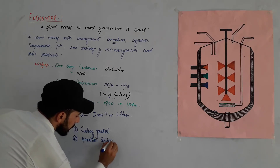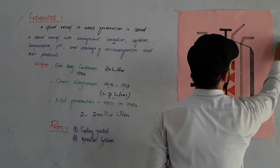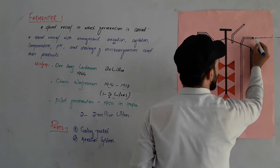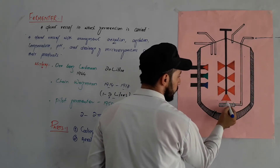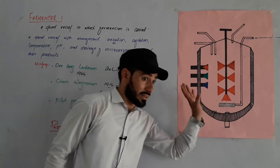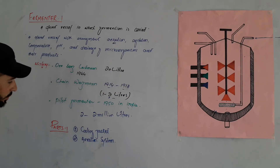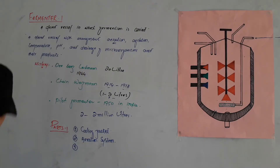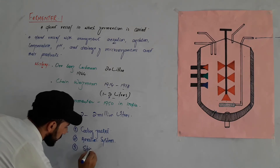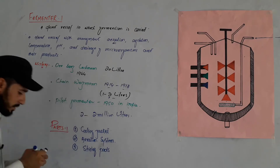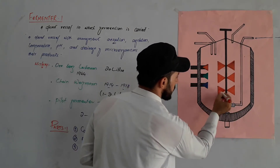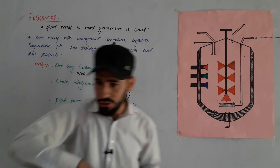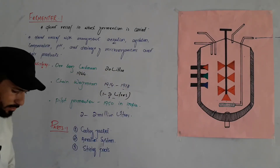Next is the aeration system — part number two or three. Also important are the stirring pads. The stirring pads are inside the fermenter — they rotate and perform mixing, which is the agitation. So the stirring pads carry out the agitation function — they mix the contents inside the fermenter.